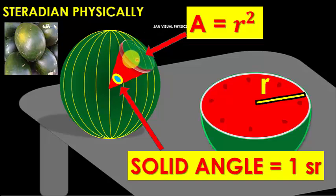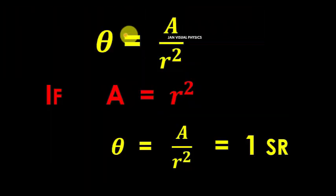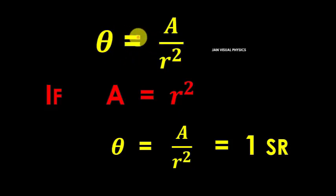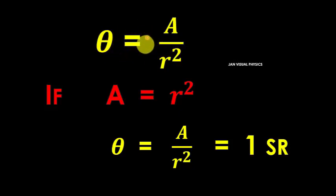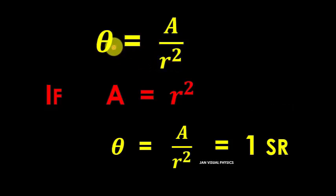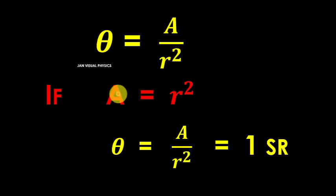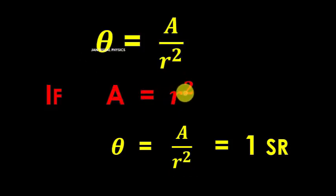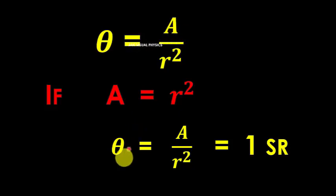Now we discuss how we can get one steradian mathematically. For solid angle, theta equals area over radius squared. If we put area equals radius squared into this equation, we get theta equals one steradian.